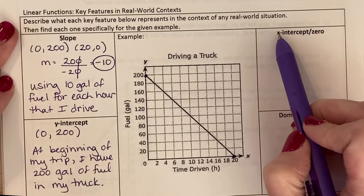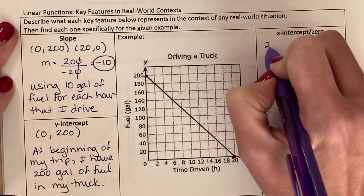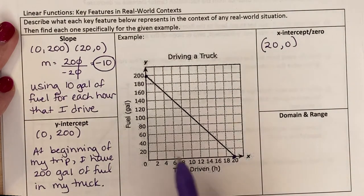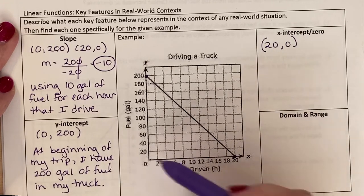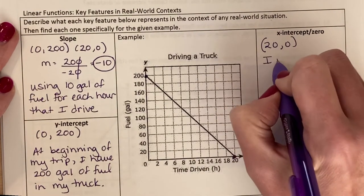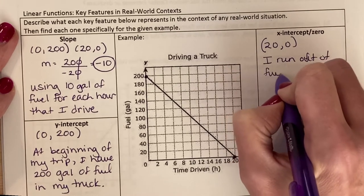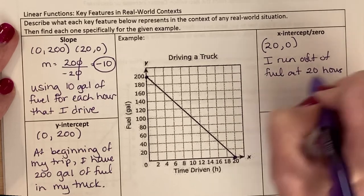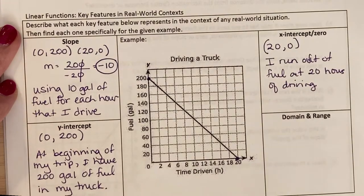Let's talk about what the x-intercept is. Where does it cross the x-axis? It crosses at (20, 0). What does that mean? After 20 hours of driving, I have no fuel. That means I run out of fuel after driving 20 hours. I can drive 20 hours without refueling, approximately.